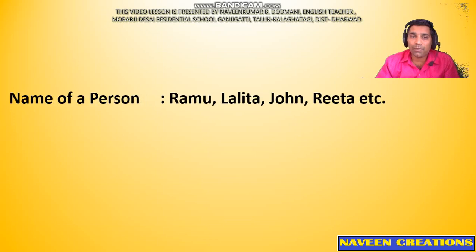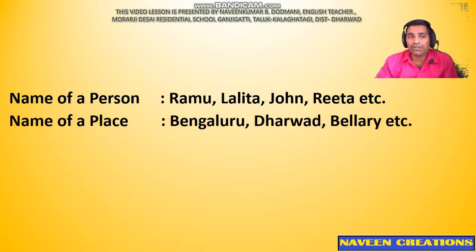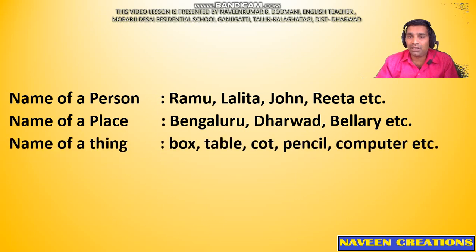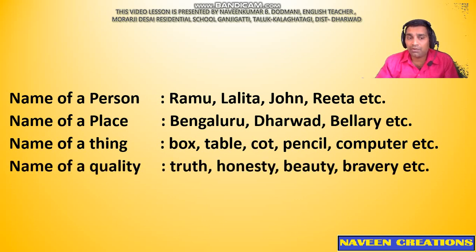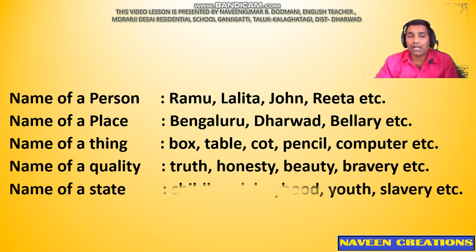Let us have some examples for nouns. A noun can be the name of a person: Ramu, Lalita, John, Rita, etc. The name of a place: Bengaluru, Dharwad, Bellari, etc. The name of a thing: box, table, cot, pencil, computer, etc. A noun can also be the name of a quality: truth, honesty, beauty, bravery, etc.